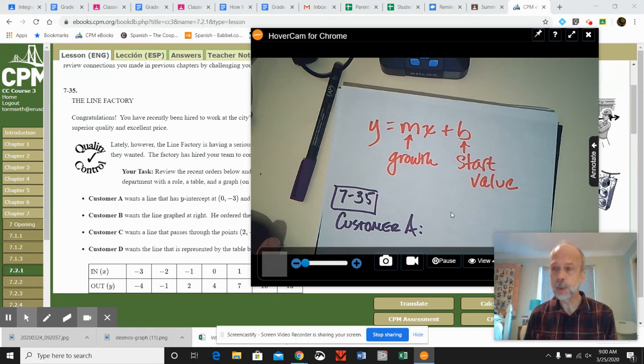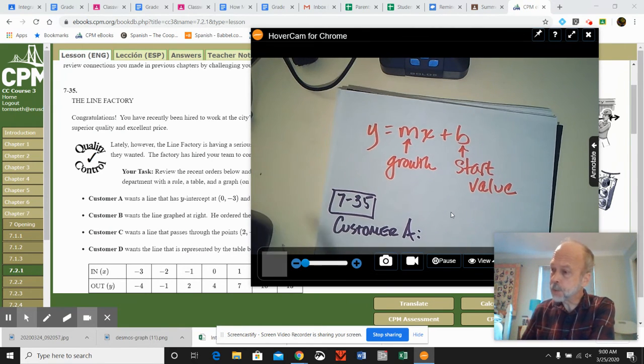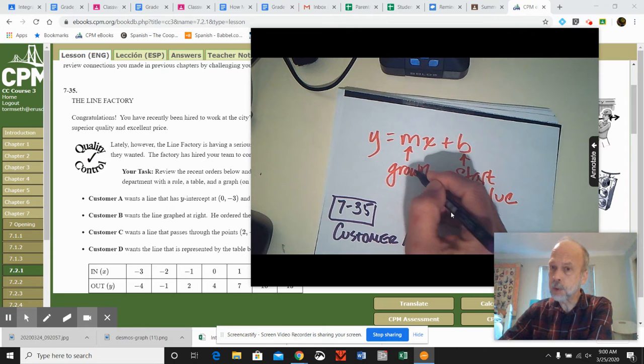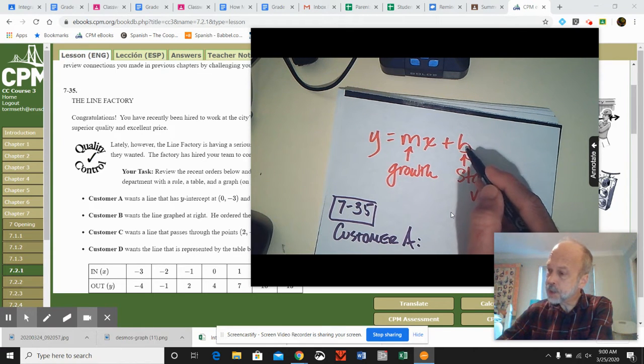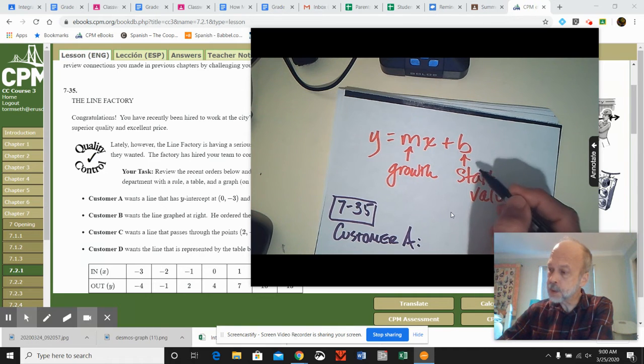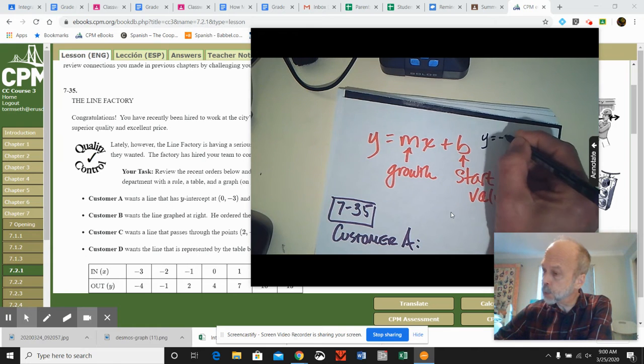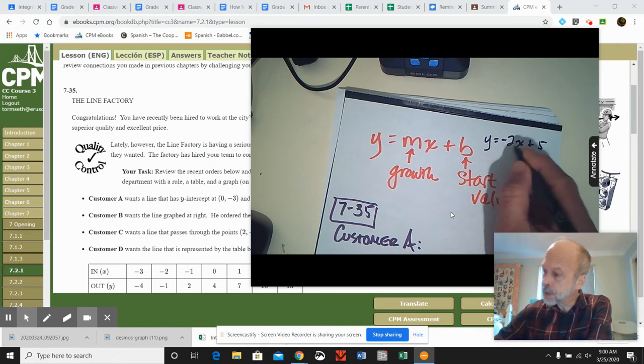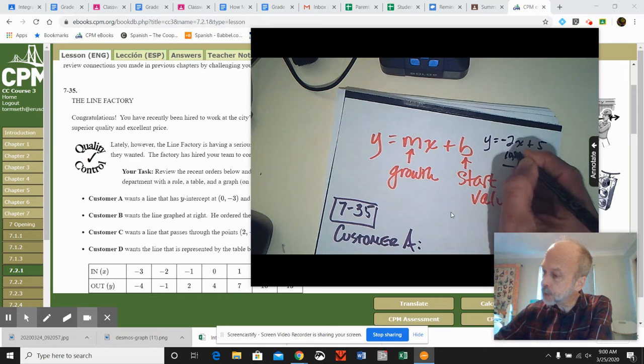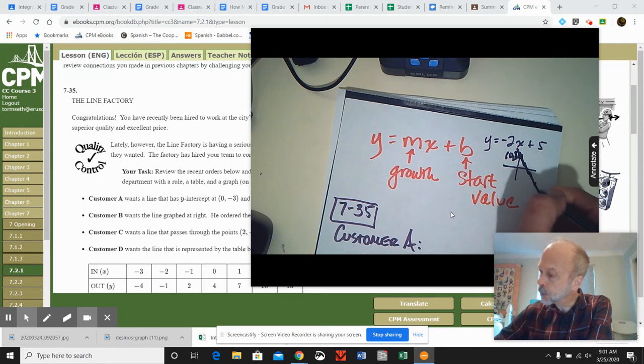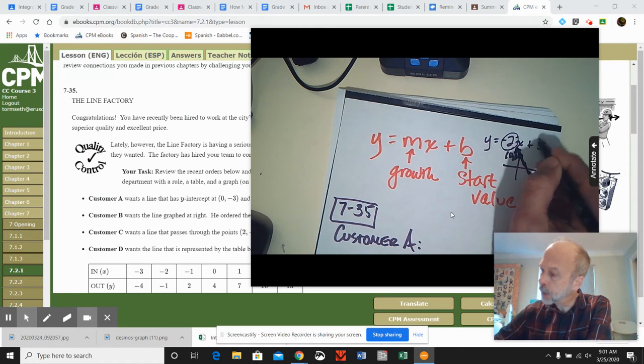So just to recap quickly, when we have some kind of equation, the number multiplied by the x tells us how the line is growing. And the constant without being multiplied by the x is our starting value. So just as a quick example, if someone showed us y equals negative 2x plus 5, that tells us this is a situation where the starting value is here at 0, 5. And then the line is going to drop down two units each time as we go to the right. So just keep that in mind, growth and starting value.